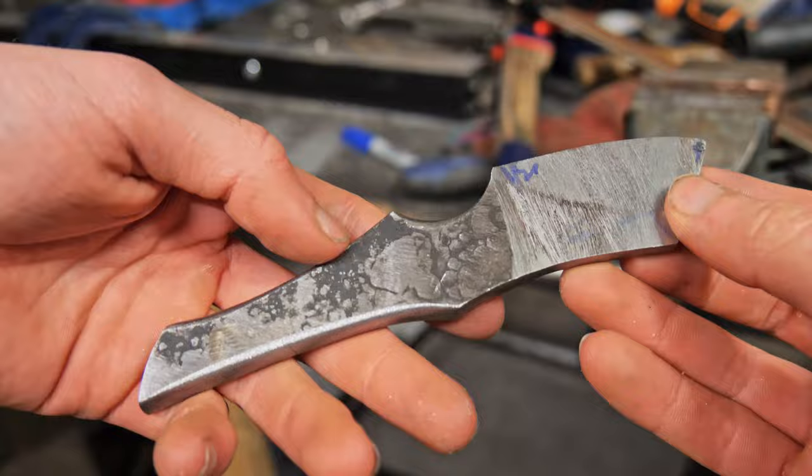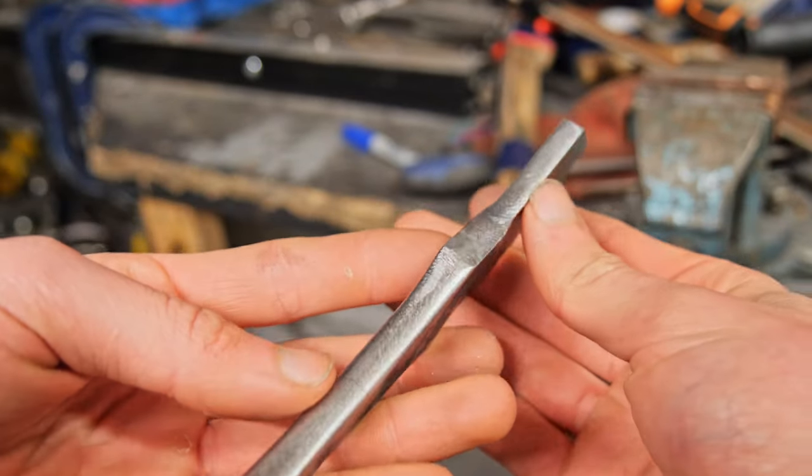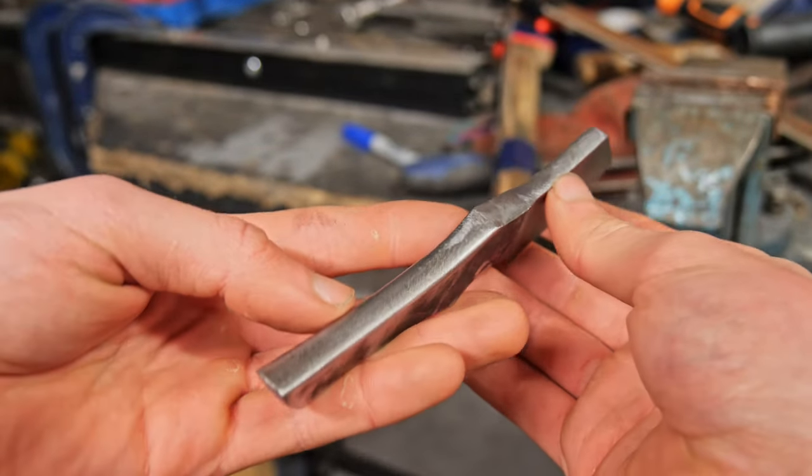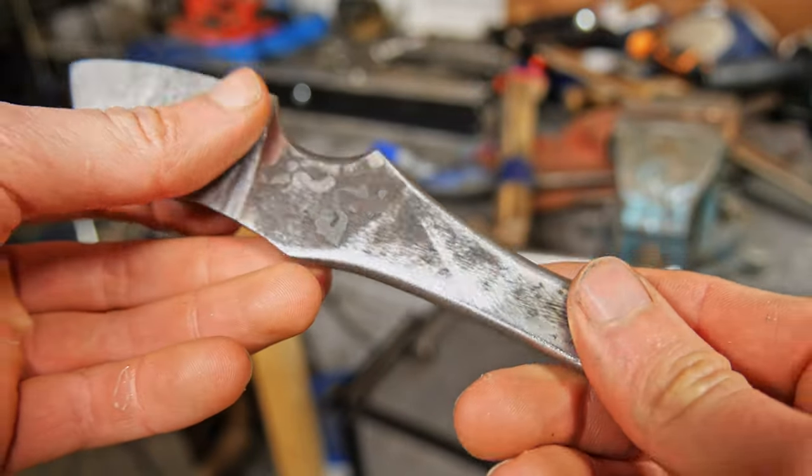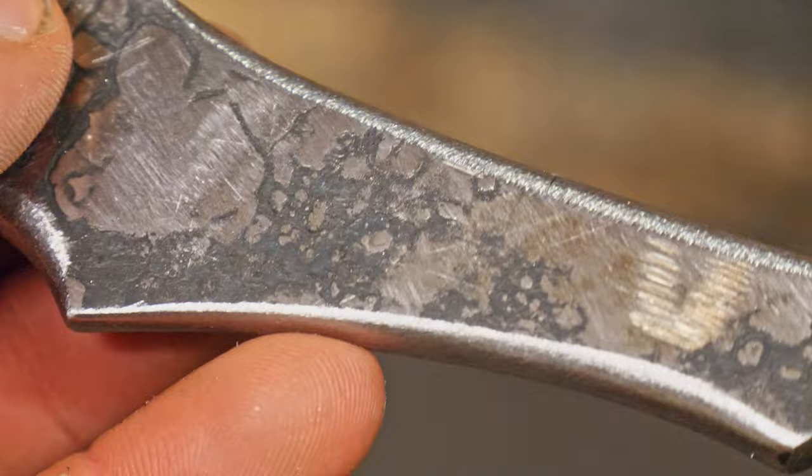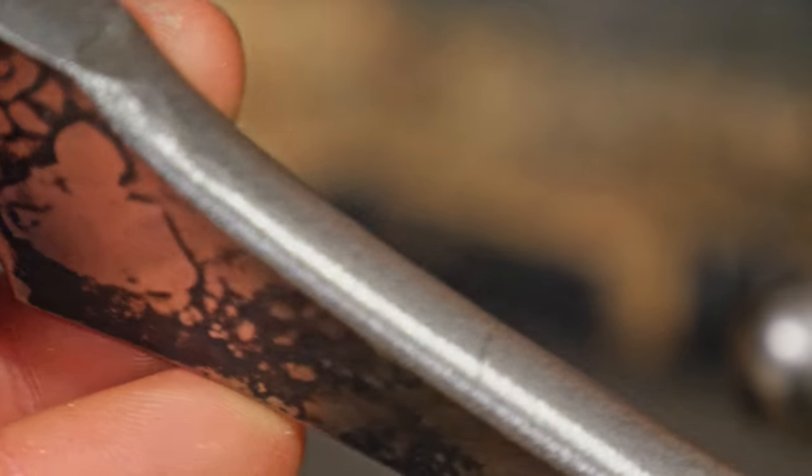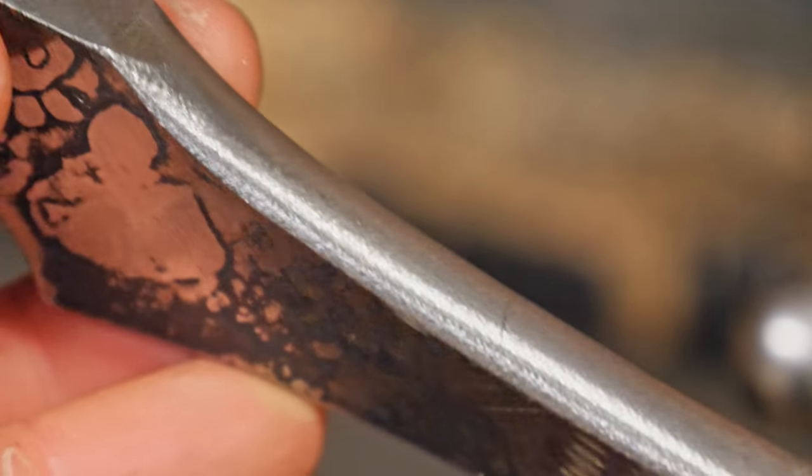So this is what the blade looks like after the basic shaping and after I've roughed in the bevels. I quite like this weird shape of the handle and it's actually surprisingly ergonomic. Some of the cracks from that first heat treat that ruined the big knife have been transferred into the handle but fortunately the blade is still looking all good so far.